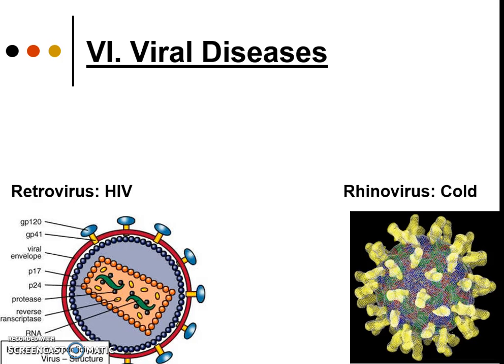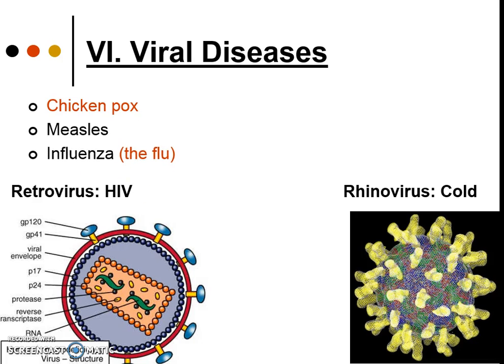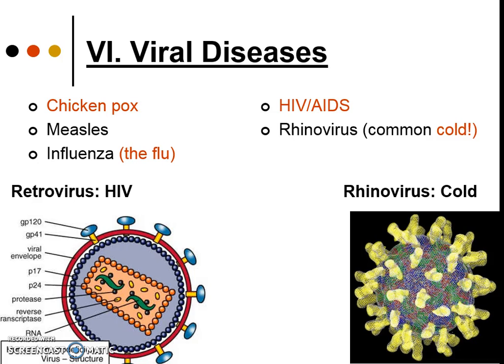Let's learn about viral diseases. There are many examples of things that are viruses — not bacterial, not made of cells. Chicken pox, the flu, HIV/AIDS, the common cold, and measles. Some of these you can get vaccinated for, but some we don't really have effective treatments for yet, such as HIV/AIDS. That one is especially hard because it's a special type of virus called a retrovirus, which makes it very complicated.